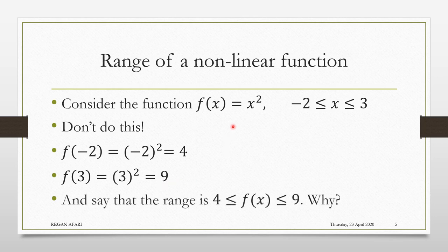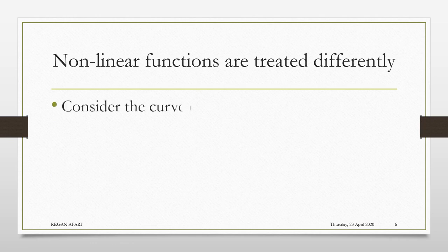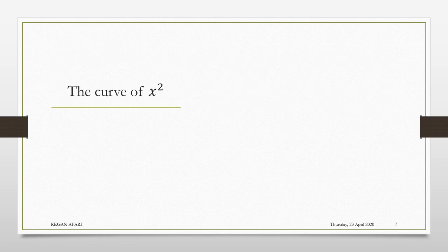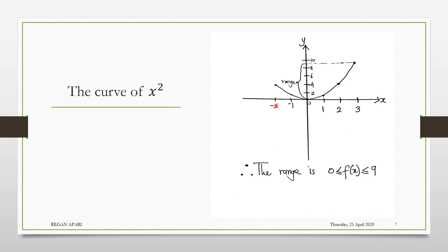Let's go ahead and sketch this function. When we sketch this function, this is what we have. Remember that it was defined on the domain negative 2 to 3, so the numbers in consideration are negative 2, negative 1, 0, 1, 2, and 3. You can decide to sketch, and when you sketch, this is how it will look.